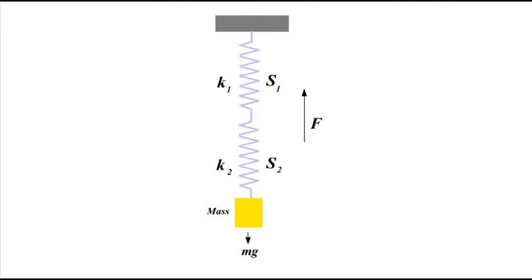So depending on that, the analysis will vary and the values will change. Here we have a series spring setup. We have two springs S1 and S2 with different spring constants K1 and K2. They are connected back to back in series. The extreme end of S1 is connected to the rigid support, and the other extreme end of S2 is connected to a mass which is hanged downwards with weight force Mg. The restoring force acting on both the springs will be the same because they are in series. The restoring force will always act in the opposite direction to the displacement.